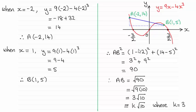So we do here, AB squared equals the difference between the x-coordinates. I've done 1 minus minus 2. That gives us 3. So that length across there is 3 units.